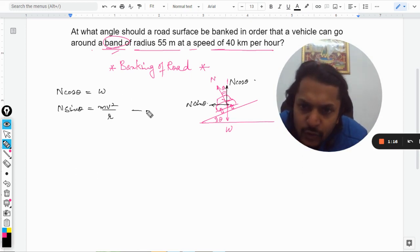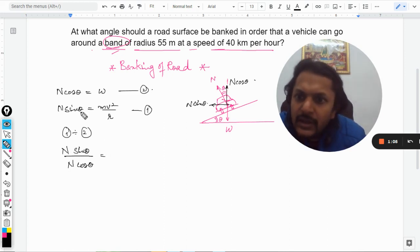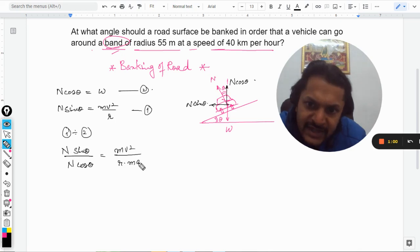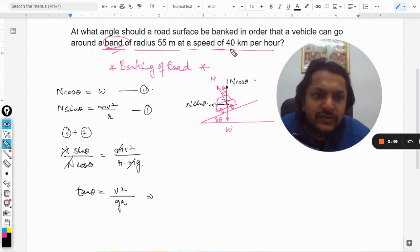From here, I'm checking this as equation 1 and this as 2. Now I divide the first equation by 2, so N sin theta divided by N cos theta will be equal to m v squared by r. Weight is now taken as m into g, so m and m gets cancelled and N gets cancelled. So tan theta is equal to v squared by gr. From here, the velocity is given to us, radius is given to us, gravity is given to us, and we will find the tan theta.